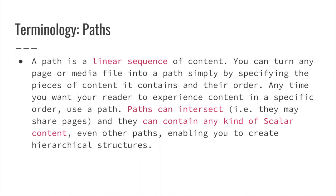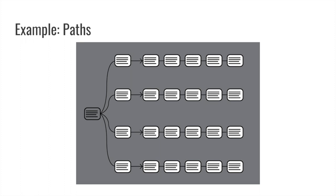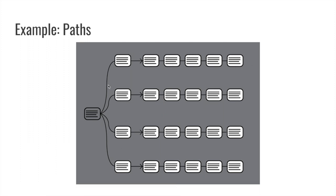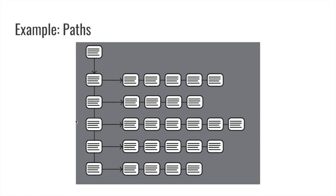There are two terms unique to Scalar I want to define. The first is a path. A path is an arrangement of pages in a Scalar book in a linear sequence, like the traditional book model. Here's an example where a first page might be an introduction that leads to other pages, which then lead to a whole path of connected pages — an introduction, chapter one, chapter two, chapter three, chapter four, with a series of ideas within each chapter following.